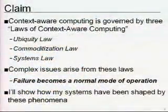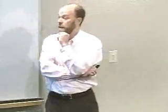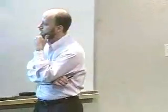So that's the backdrop for this conundrum. My claim is that context-aware computing is governed by three laws: the ubiquity law, the commoditization law, and the systems law. Out of these laws arise very complex phenomena — to the point where I claim that failure, as we normally perceive it as systems builders, becomes a normal mode of operation. You can't treat it like failure anymore, and yet it's totally pervasive and important. I'm going to go through these laws and then talk about how my systems have been shaped by them and what remaining outstanding problems we have for building these systems.